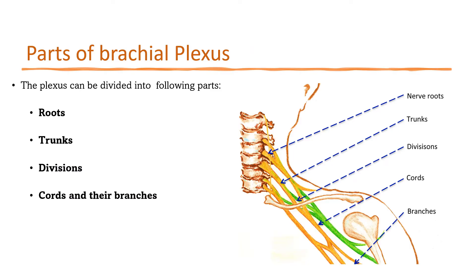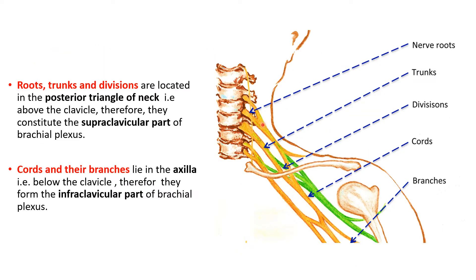Let us look at the parts of the brachial plexus. Brachial plexus resembles an inverted tree, so its parts are like the parts of a tree: roots, trunks, divisions, cords, and branches. The roots, trunks, and divisions are located in the posterior triangle of the neck above the clavicle — they constitute the supraclavicular part. The cords and branches lie below the clavicle within the axilla — the infraclavicular part.